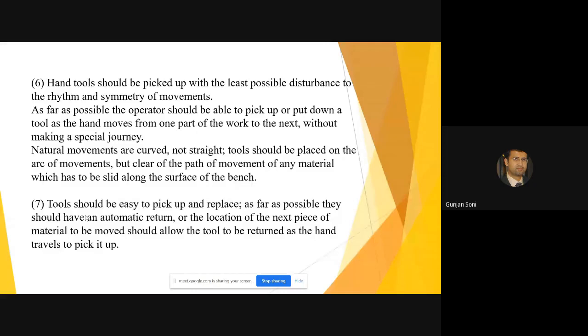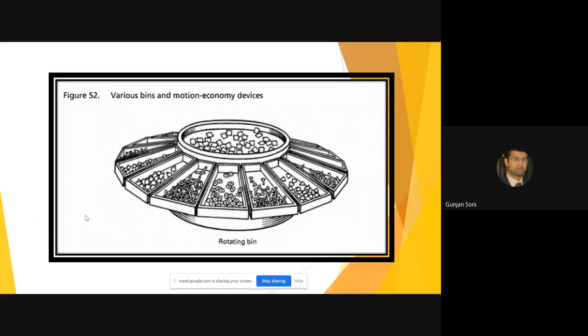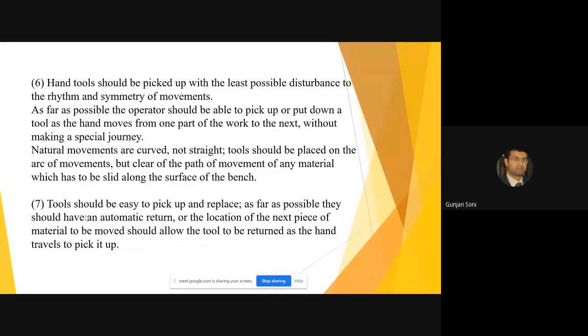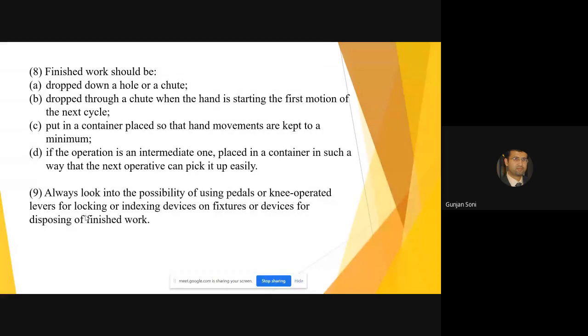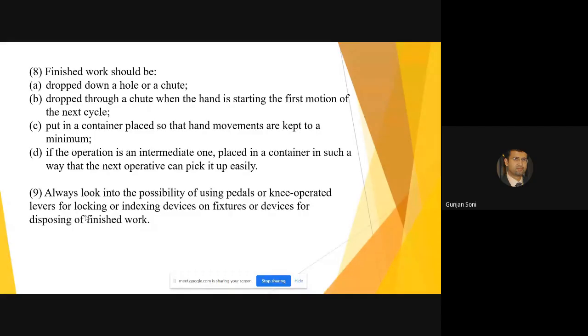Natural movements are generally curved and not straight. This is another example which is given over here. Various bins could be, if you have different parts, you can use a rotating bin for that purpose. When you finish the work, it should be dropped down a hole or a chute. Dropped through chute. The dropping should happen in the next cycle and not at the end of the cycle.